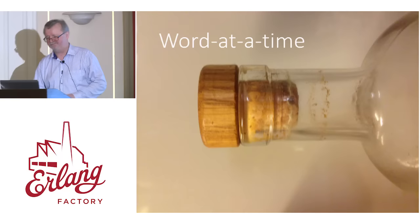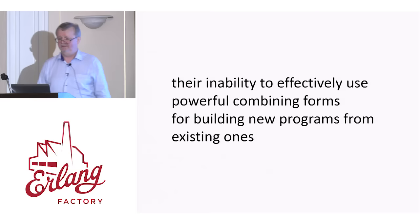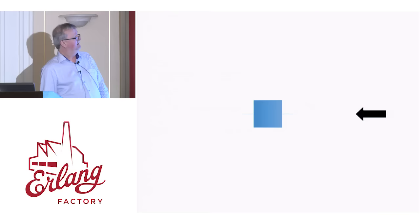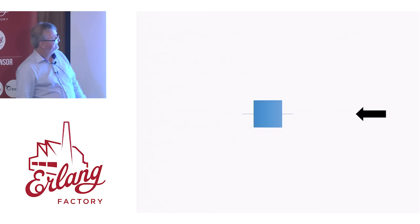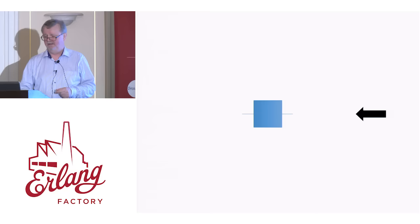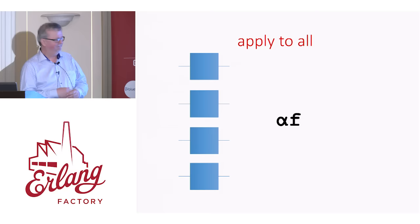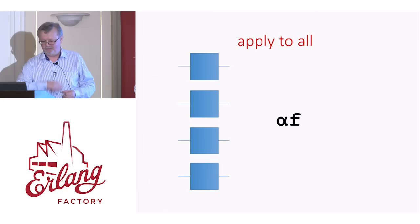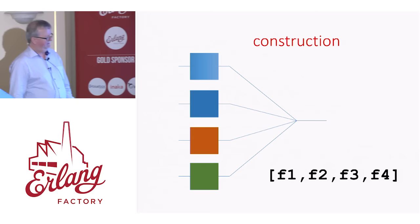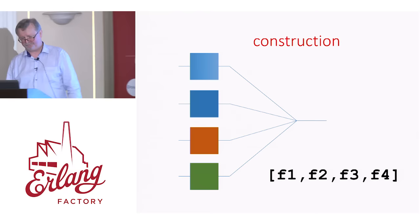Backus was dead against word-at-a-time programming. 'Their inability to use powerful combining forms for building new programs from existing ones.' In these diagrams the boxes represent functions — they take inputs from the right and generate outputs on the left. Backus was interested in forms for putting functions together into more complex functions. For example, what he called 'apply to all,' written alpha f, which replicates a function once for each element of a list — we'd call this map. Another one: if you've got four different functions f1 to f4, you might make what Backus called a construction — you put them together to get a function that takes its input, distributes it to each function, and collects the results in a list.